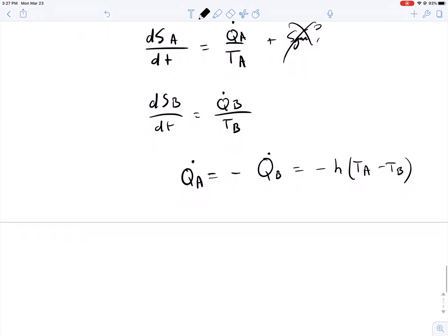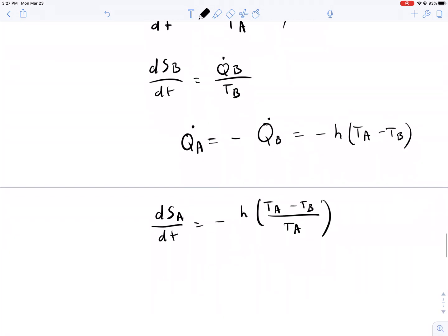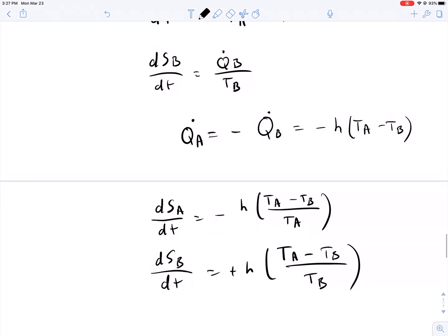And this will be equal to minus H times the temperature difference between the two halves. So, when you substitute these into our differential equations, we'll have DSA DT equals minus H times TA minus TB, all divided by TA. And then, similarly, we'll have DSB by DT is equal to minus H times TA minus TB, all divided by temperature in subsystem B.